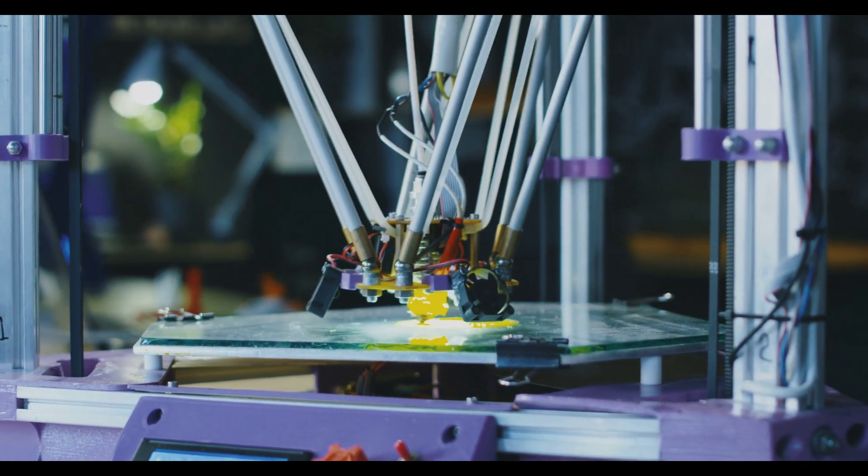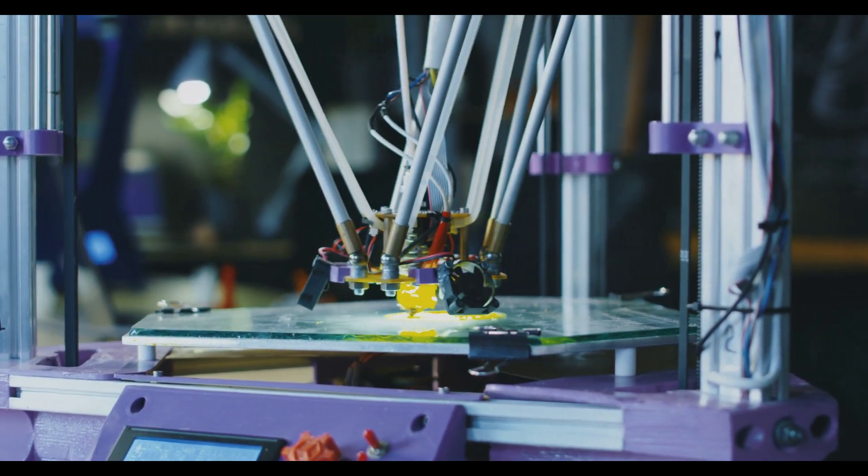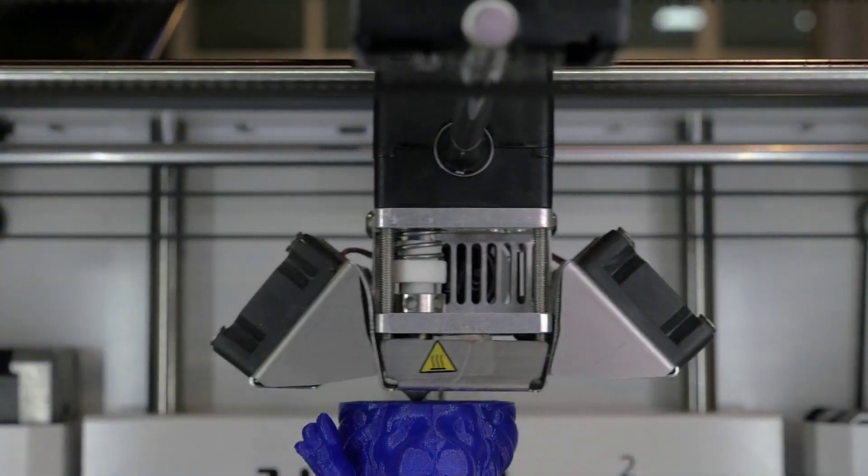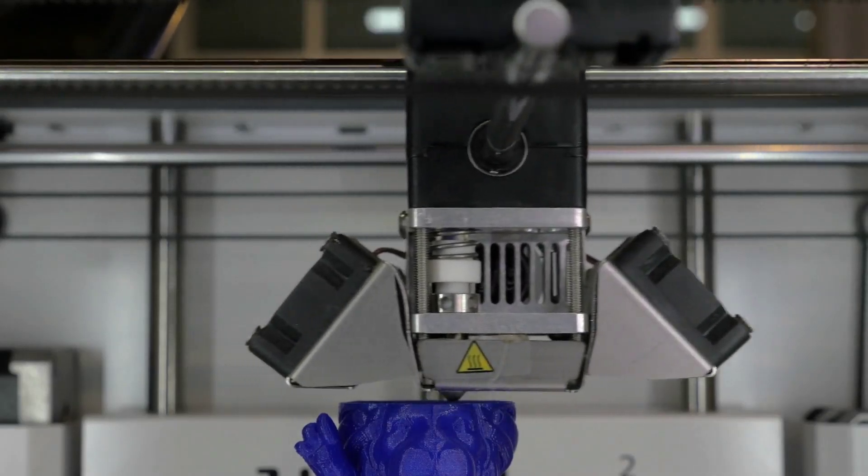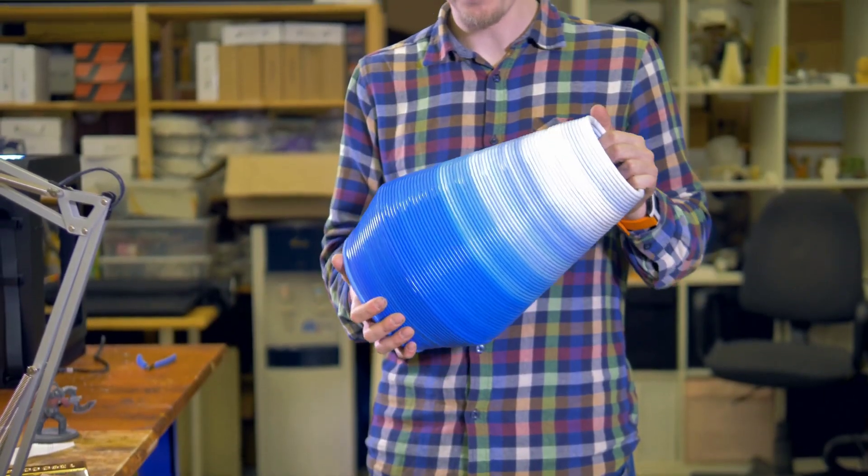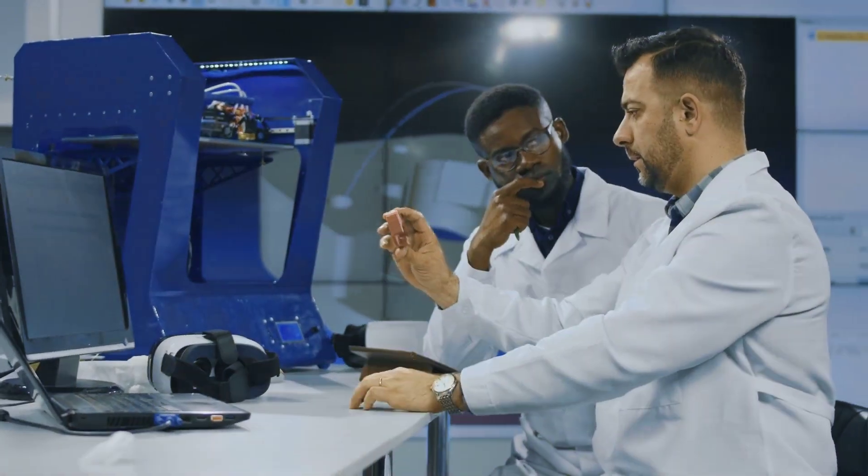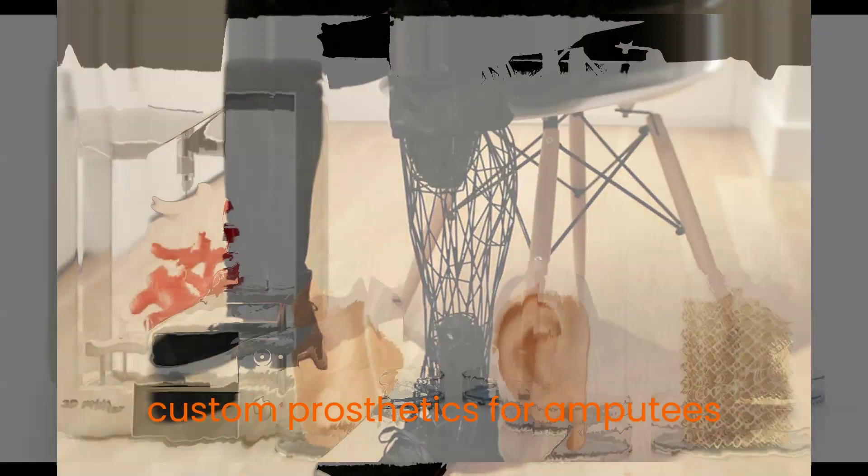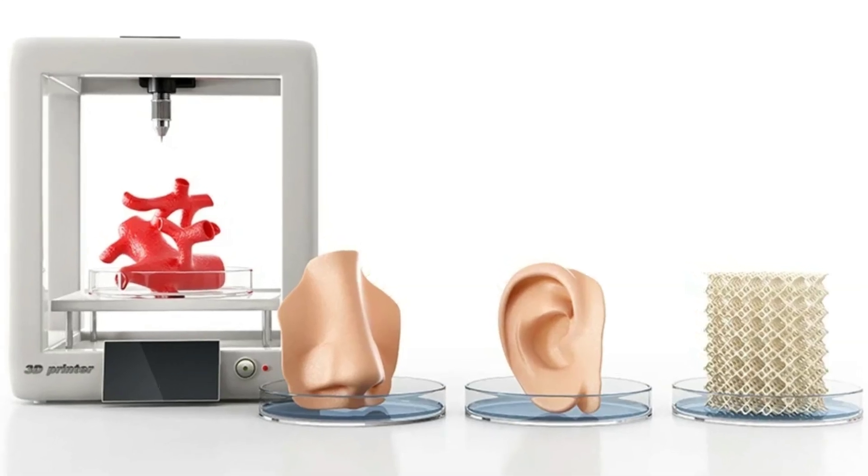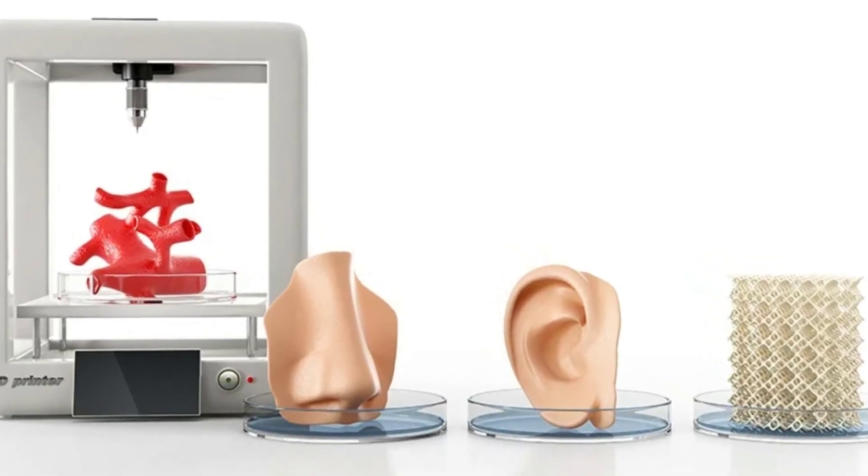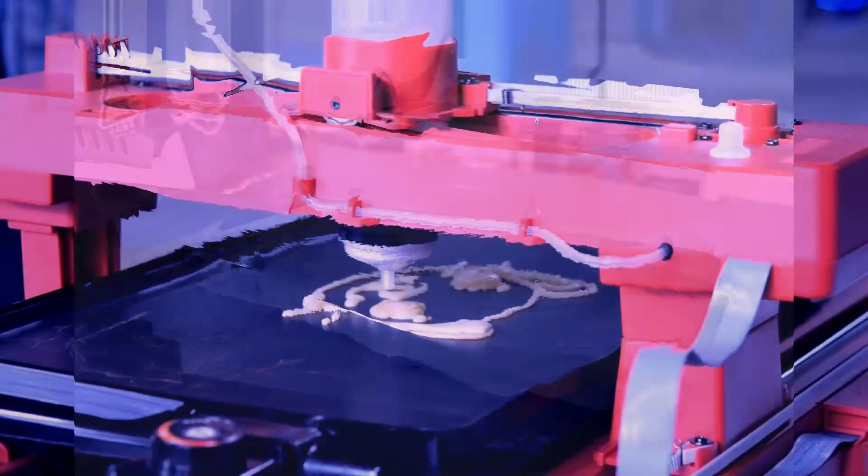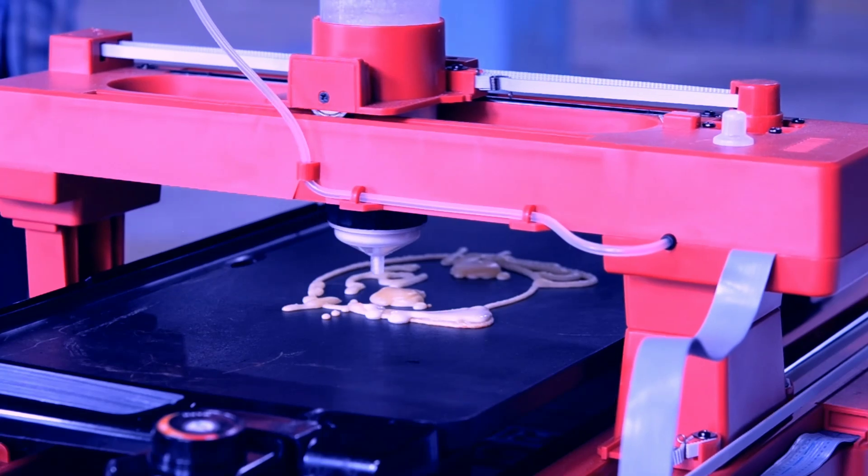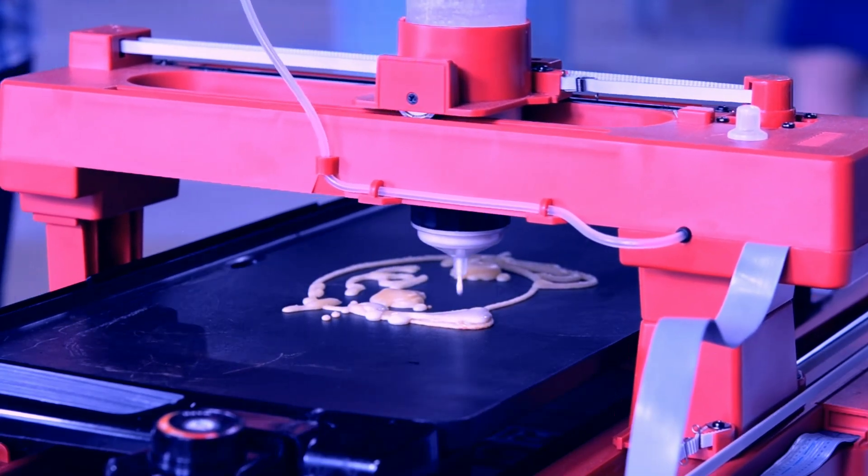3D printing isn't just about cool gadgets. It's making a real difference in various fields. Manufacturing is using 3D printing to create complex parts, prototypes, and even finished products on-demand. In medicine, doctors are using 3D printing to create custom prosthetics for amputees and even print 3D models of organs for surgery planning. The possibilities extend to everything from personalized phone cases to printing customized food with intricate designs. 3D printing is blurring the lines between technology and creativity in exciting ways.